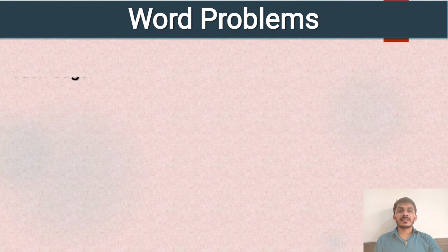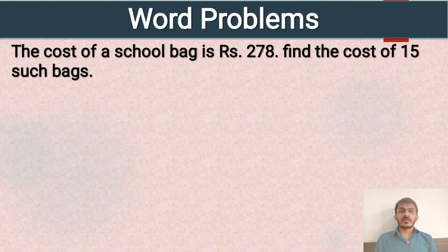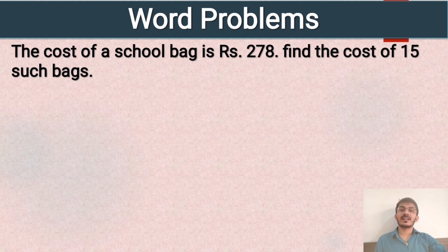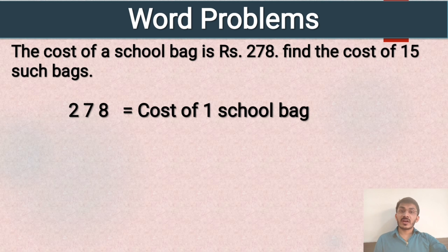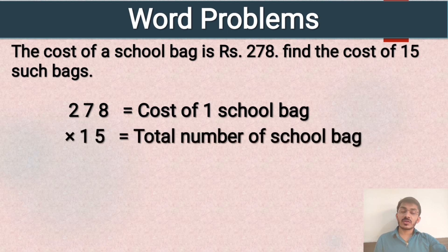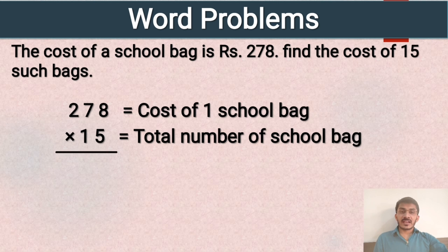Next word problem: the cost of a school bag is rupees 278. Find the cost of 15 such bags. 278 is the cost of one school bag, and 15 is the total number of bags. When we multiply 278 and 15 we find the total amount. Let us multiply 278 by 5, since 5 is at the ones place.